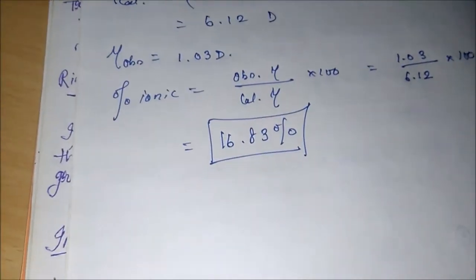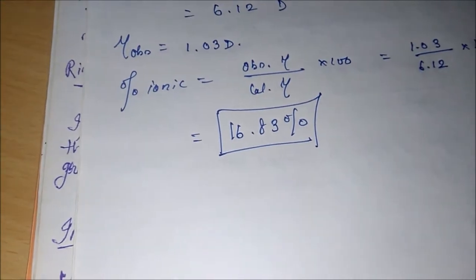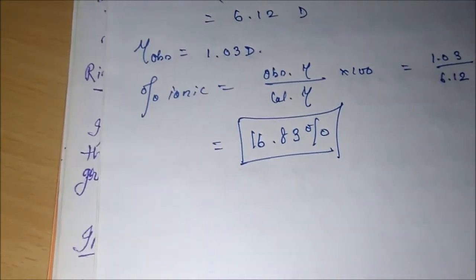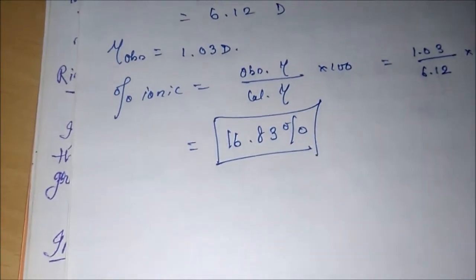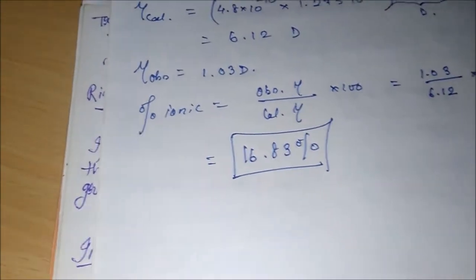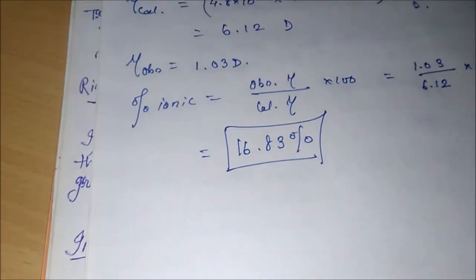But we all know that HCl is ionic in character. How can 83% be covalent? Wait a second—it is not entirely covalent. 83% is not covalent, or 16.83% does not mean that the leftover part is covalent.